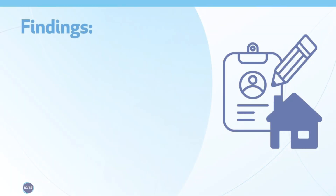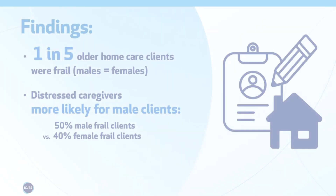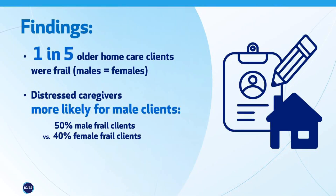In terms of findings, we observed that one in five older home care clients in Ontario showed frailty. Even though there were significant differences between male and female clients in their health and social circumstances, they showed the same prevalence — one in five. However, male clients who were frail were much more likely to have a distressed caregiver — about 50% of frail male clients had a distressed caregiver, compared to about 40% for frail female home care clients.